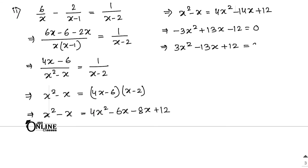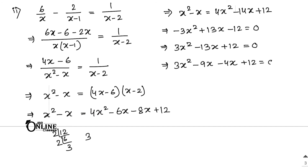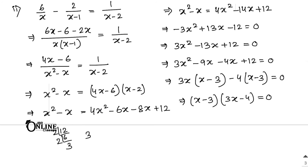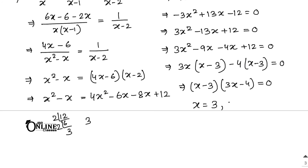So 3x² - 13x + 12 = 0. Here 3 × 12 = 36. Factorizing: factors include 2, 2, 3, 3. We need to make 13, which is 9 + 4. Write as 3x² - 9x - 4x + 12 = 0. Taking 3x common gives (x - 3), and 4 common gives (x - 3). So (x - 3)(3x - 4) = 0. Therefore x = 3 or x = 4/3. Please keep watching and keep supporting.